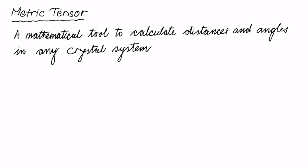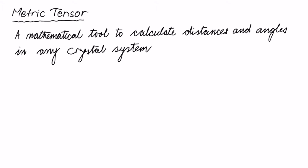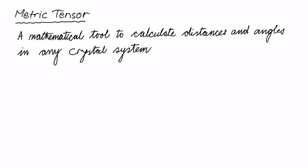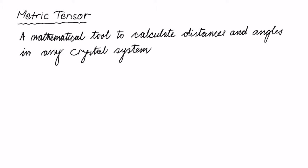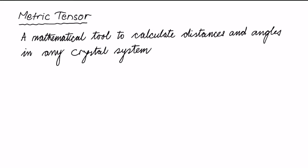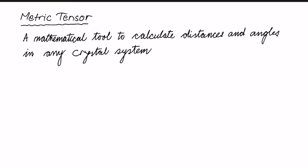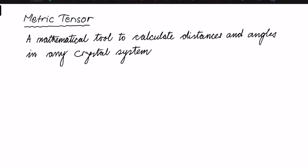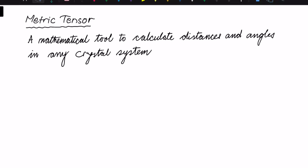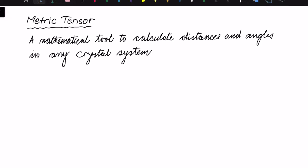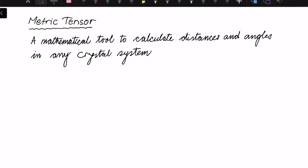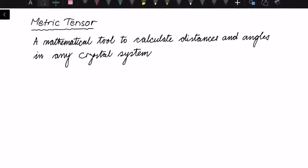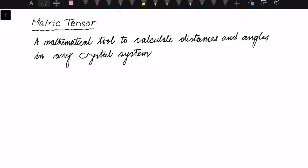The metric tensor is a mathematical tool to calculate distances and angles in any crystal system. Calculation of distances and angles is very simple in a Cartesian coordinate system, and it is also easy for a cubic system because a cubic system behaves just like a Cartesian system. But how do we do these calculations in a more complicated system, for example a hexagonal system? The metric tensor is a tool which generalizes this problem for any crystal system.